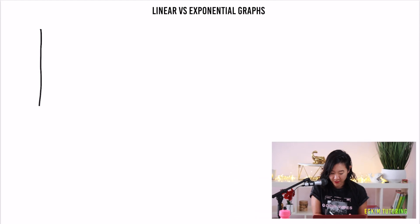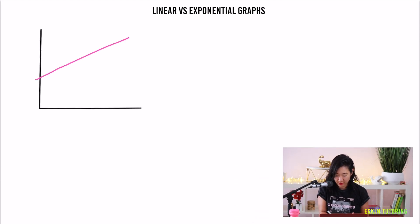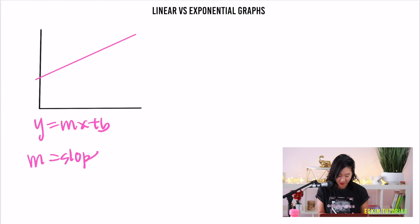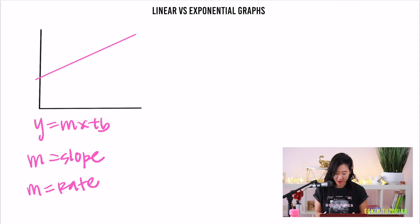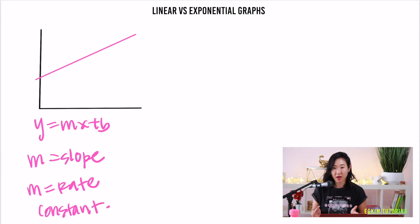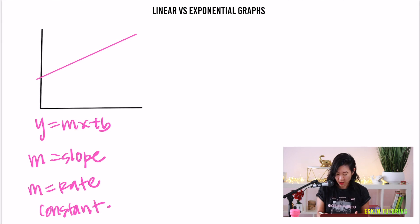For a linear graph, it's basically just a line. The equation is y equals mx plus b, where m is equal to your slope — and remember, m is actually a rate, specifically a constant rate of change. This means that for every increment of time, the amount of increase is the same, assuming the line is going in the positive direction.